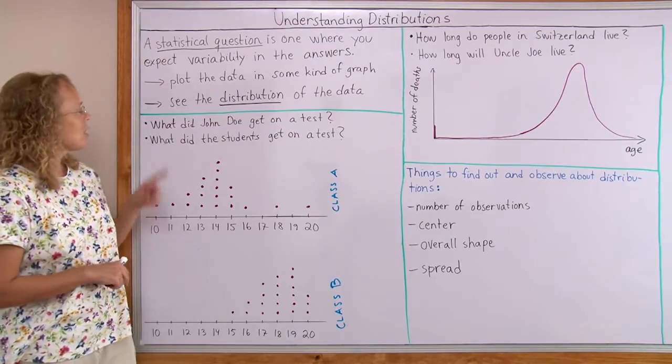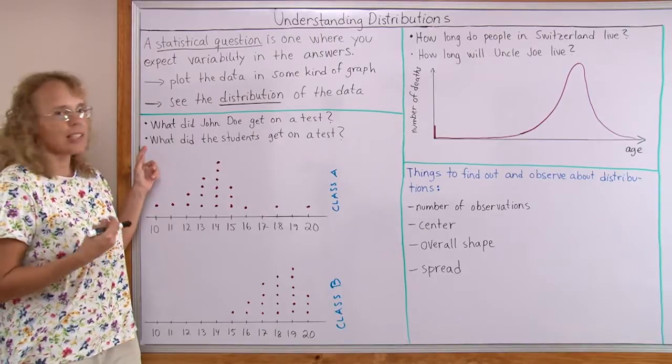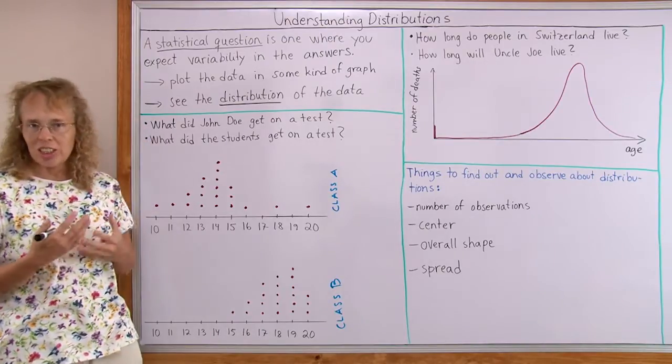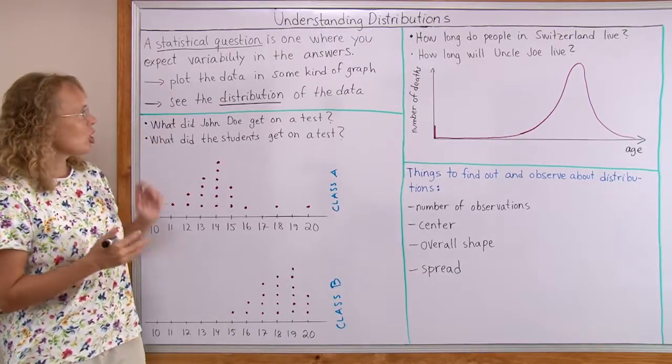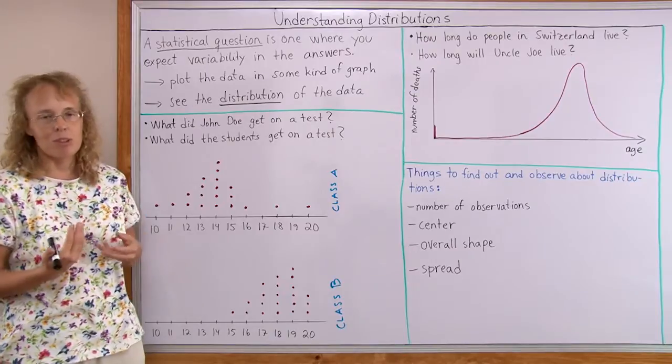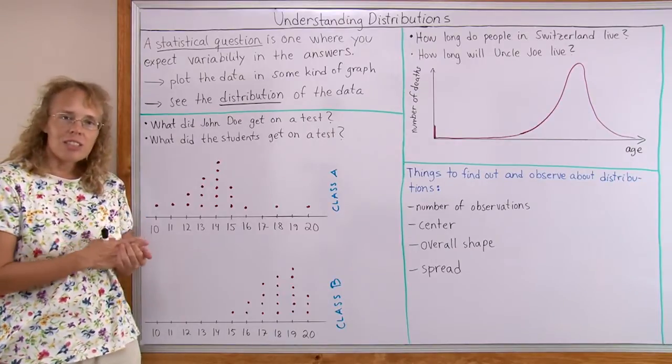For example, here's one: What did the students get on a test? And here's a question that is not a statistical question: What did John Doe get on a test? Maybe he got 75%, maybe he got 16 points, whatever. It's an individual result.